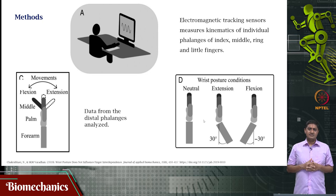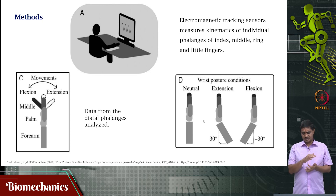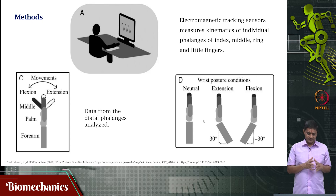We also placed one more sensor on the wrist — on the dorsal side of the palm, just distal to the wrist joint. And we placed one more sensor just proximal to the wrist joint in the forearm.